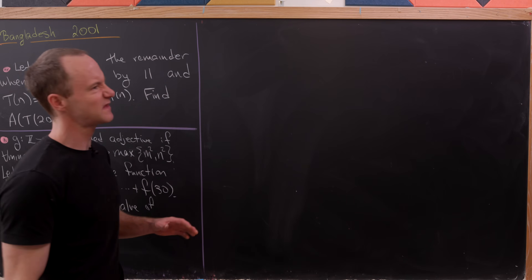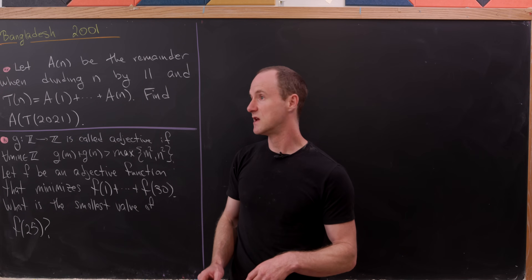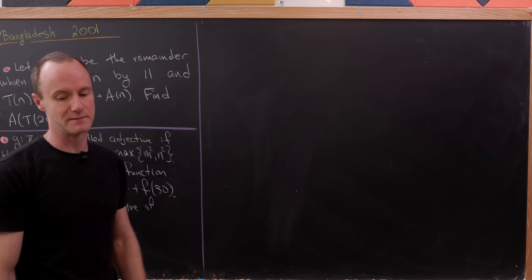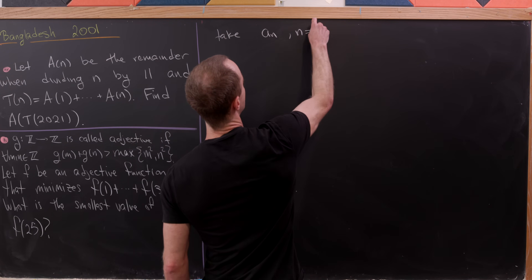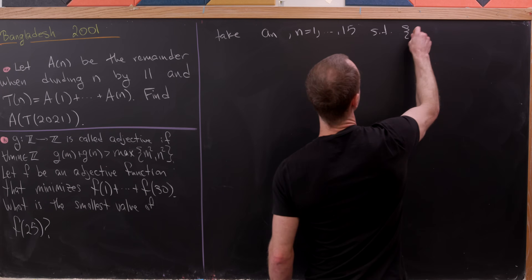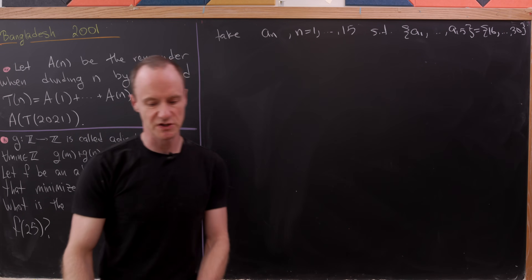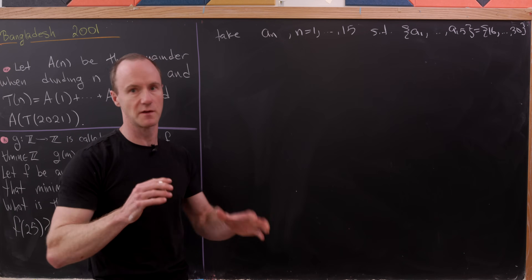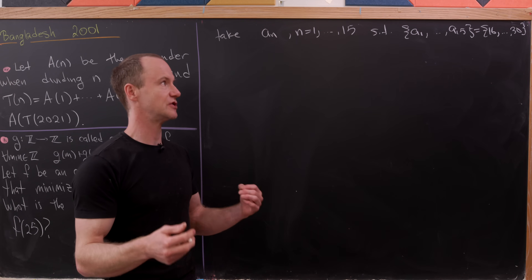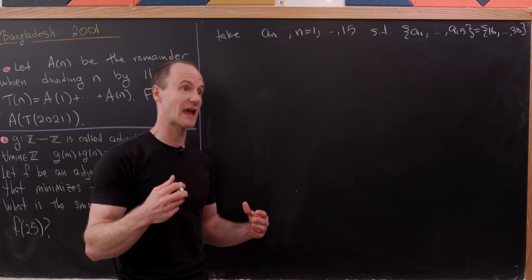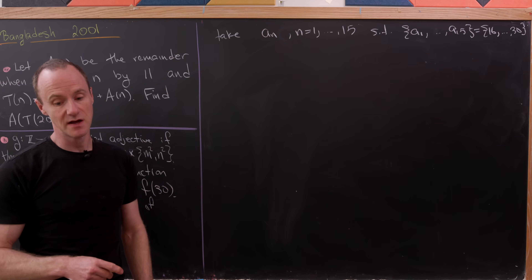So how are we going to get started? We should build an inequality for the expression f(1) up to f(30), then find a function that achieves the smallest value of that inequality. Let's take a sequence a_n where n goes from 1 to 15, so that the set {a_1, …, a_15} is simply the set {16, …, 30}. We're taking all numbers from 16 to 30 and shuffling them in any order, calling them a_1, a_2, and so on.